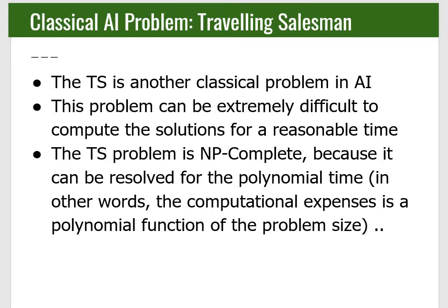The Traveling Salesman Problem is a classical AI problem. As the name suggests, it involves a salesman traveling to various cities. Take the example of a postman delivering letters to different cities — the problem needs to be minimized so that in a reasonable time and at less cost, the postman covers all cities without leaving any out.